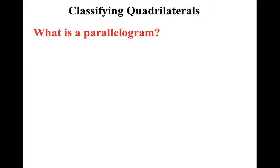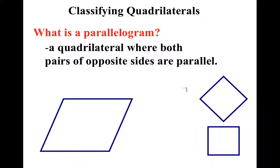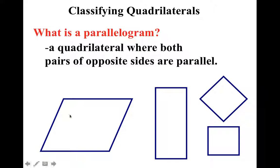What's a parallelogram? A parallelogram is a quadrilateral where both pairs of opposite sides are parallel. Notice what a parallelogram looks like. You may be saying, hey, that's a rectangle and that's a square — you're right. Rectangles and squares are parallelograms. Notice both pairs of opposite sides are parallel. A trapezoid has only one pair of parallel sides, yet with a parallelogram, both are.